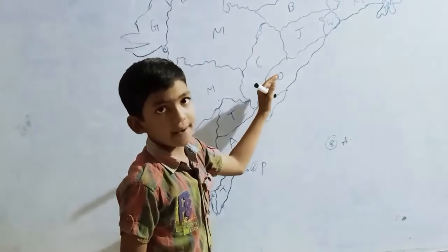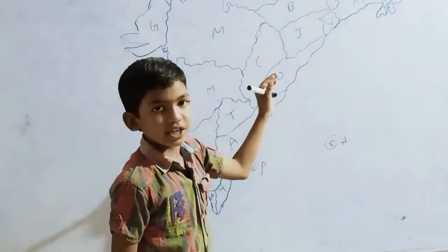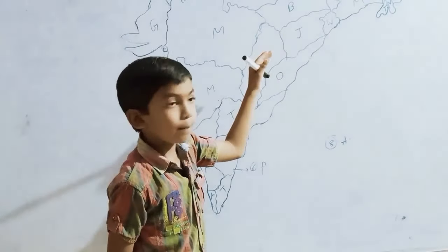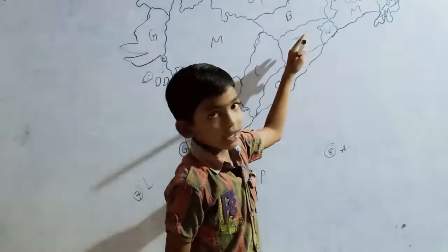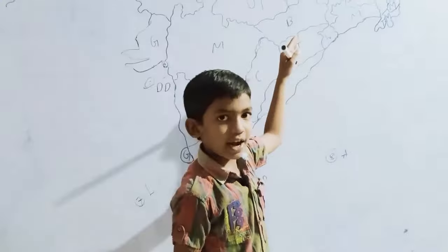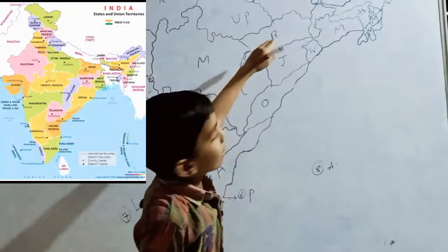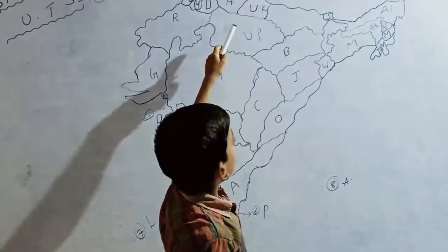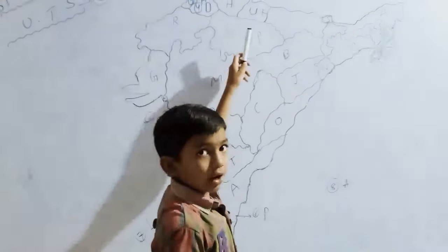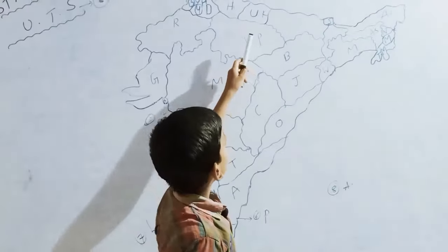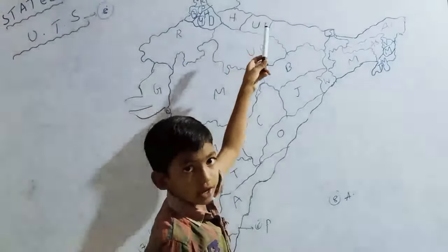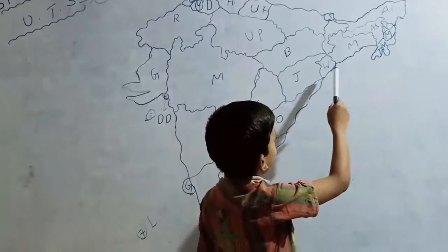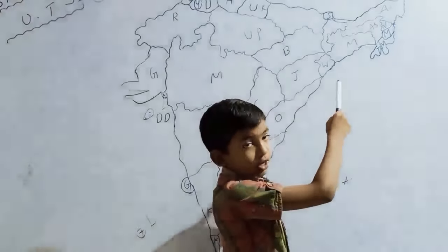And Odisha — Bhubaneswar. And Chhattisgarh — Raipur. And Jharkhand — Ranchi. And Bihar — Patna. Uttar Pradesh — Lucknow. Uttarakhand — Dehradun. And West Bengal — Kolkata.